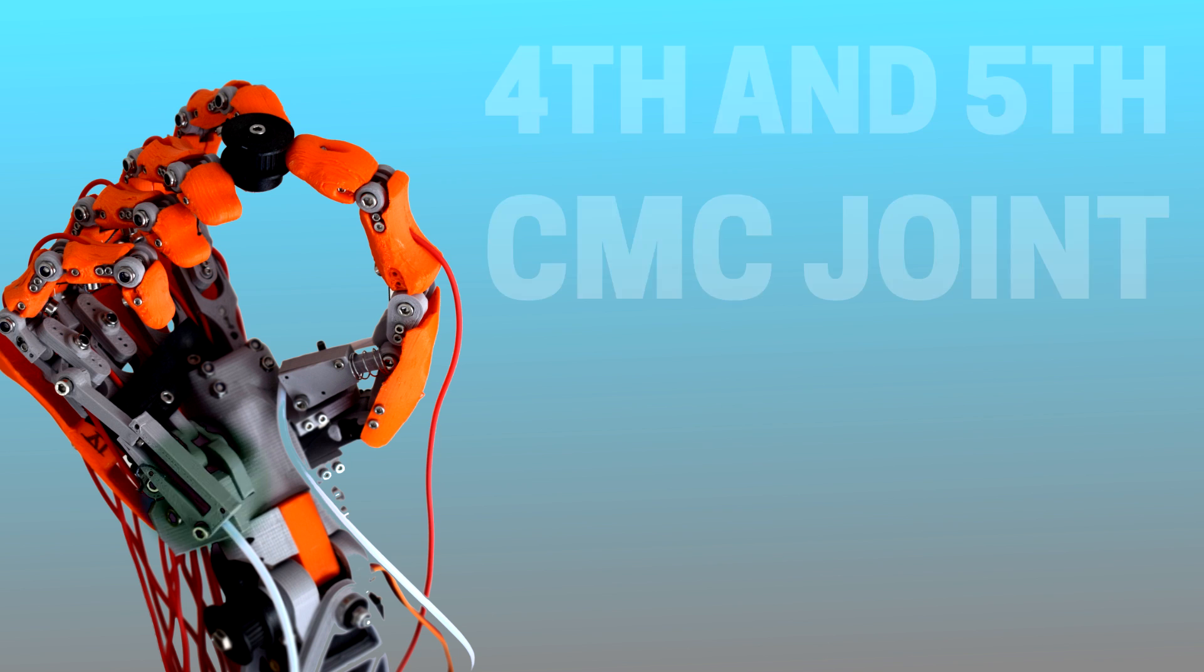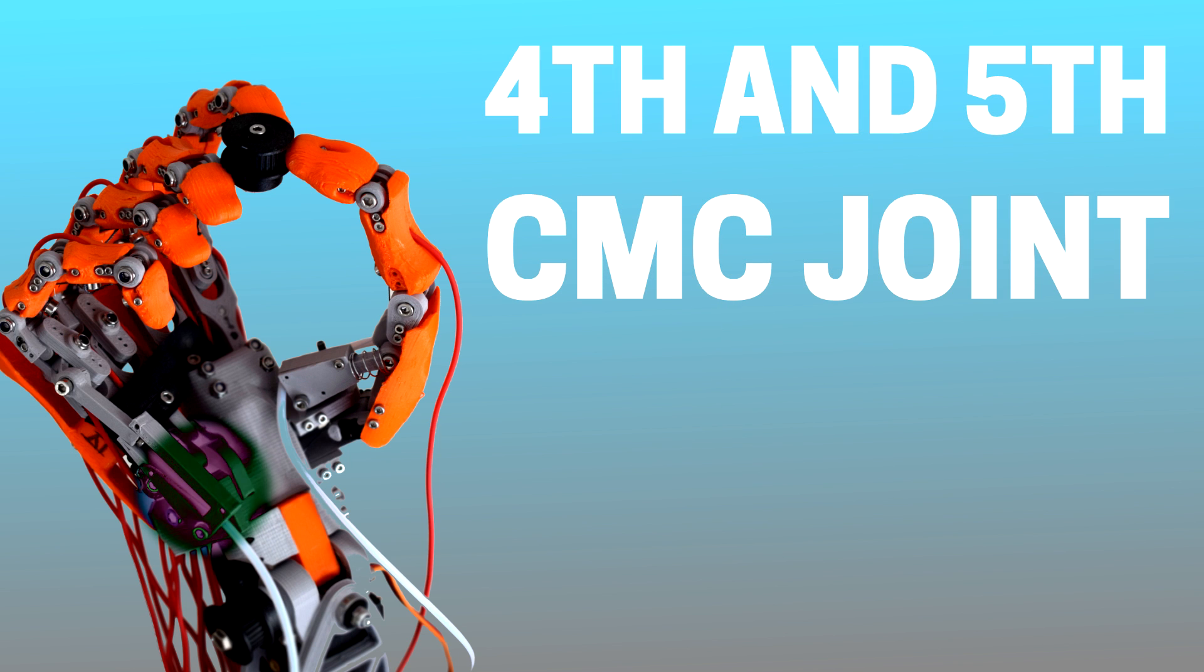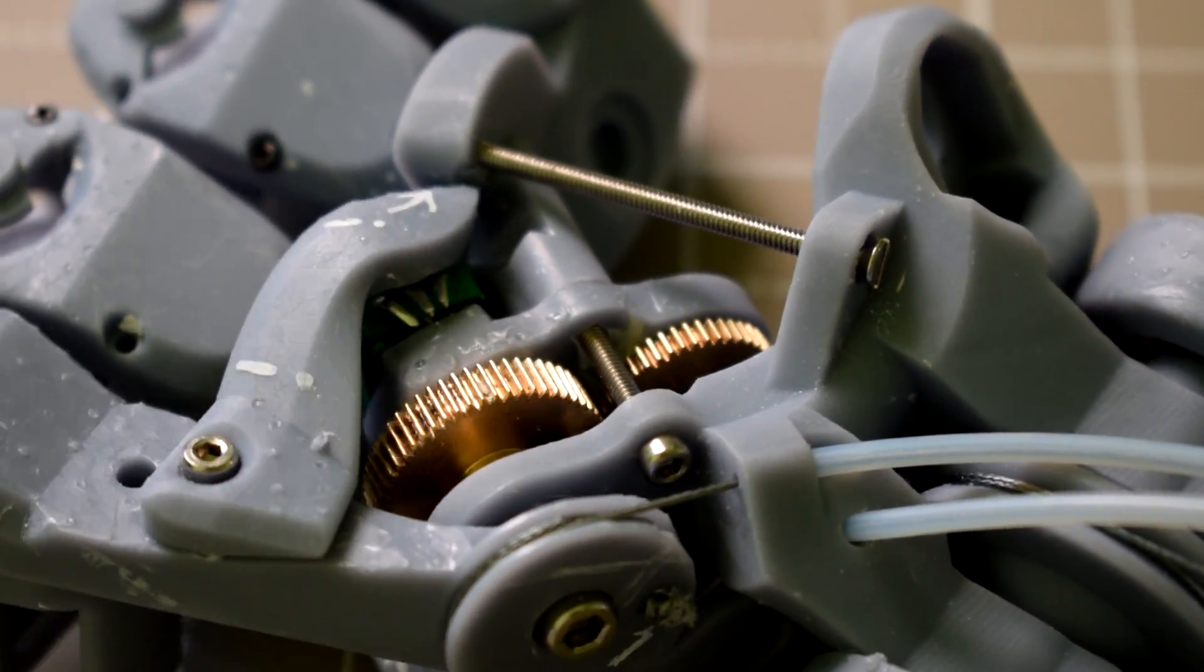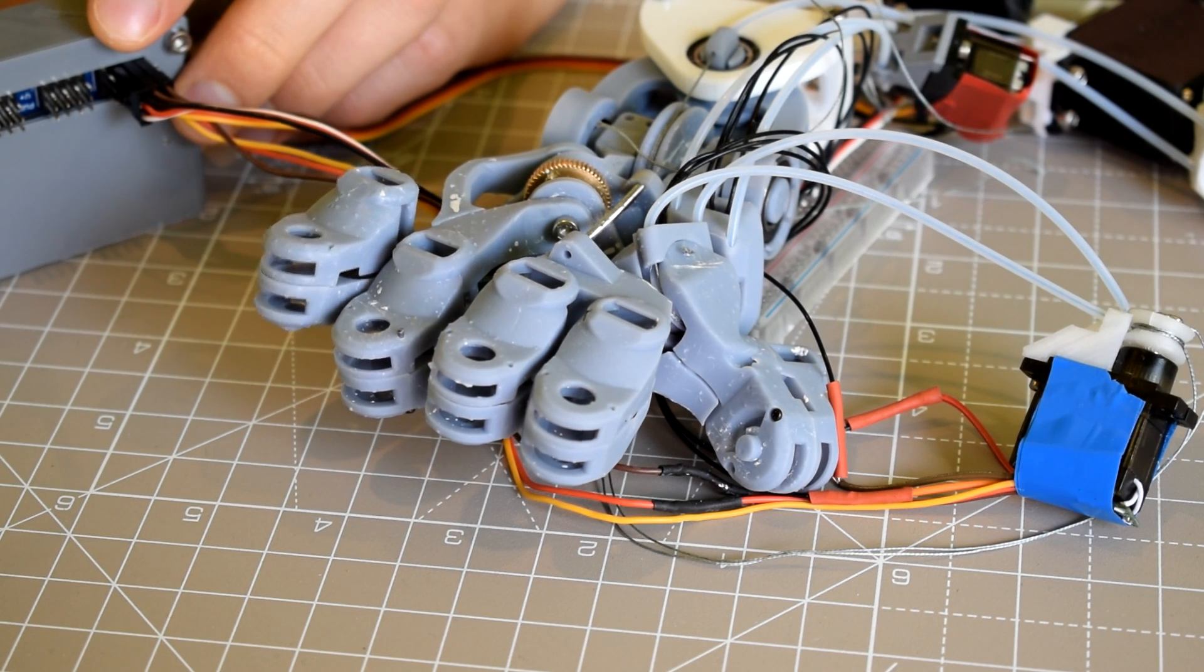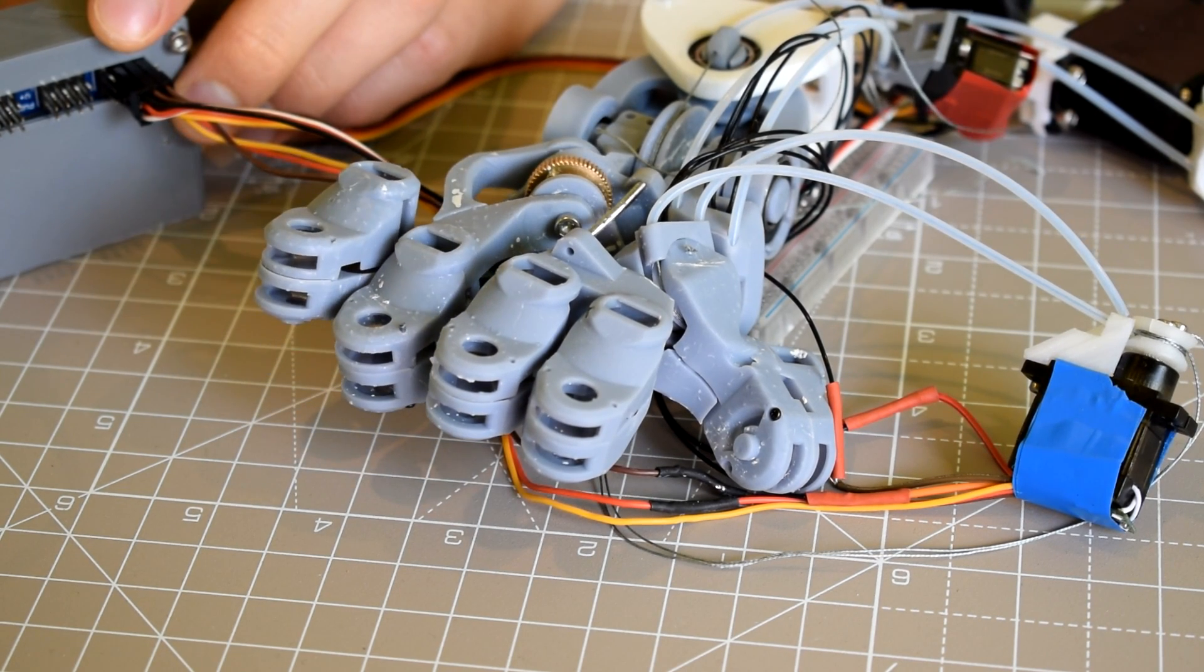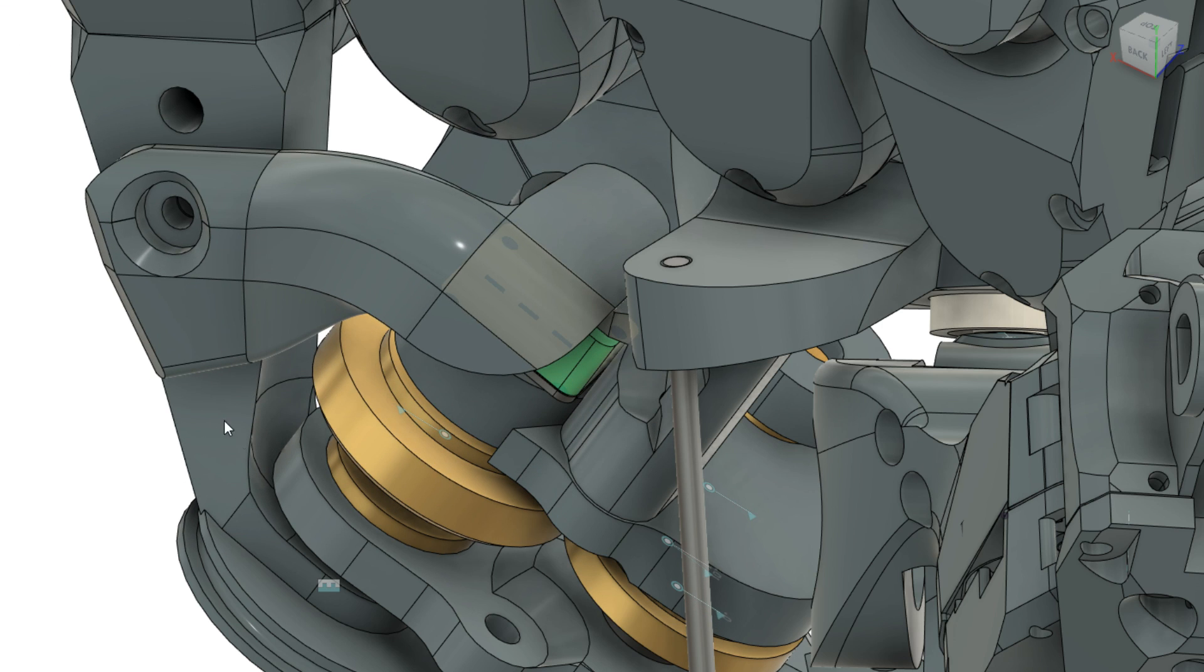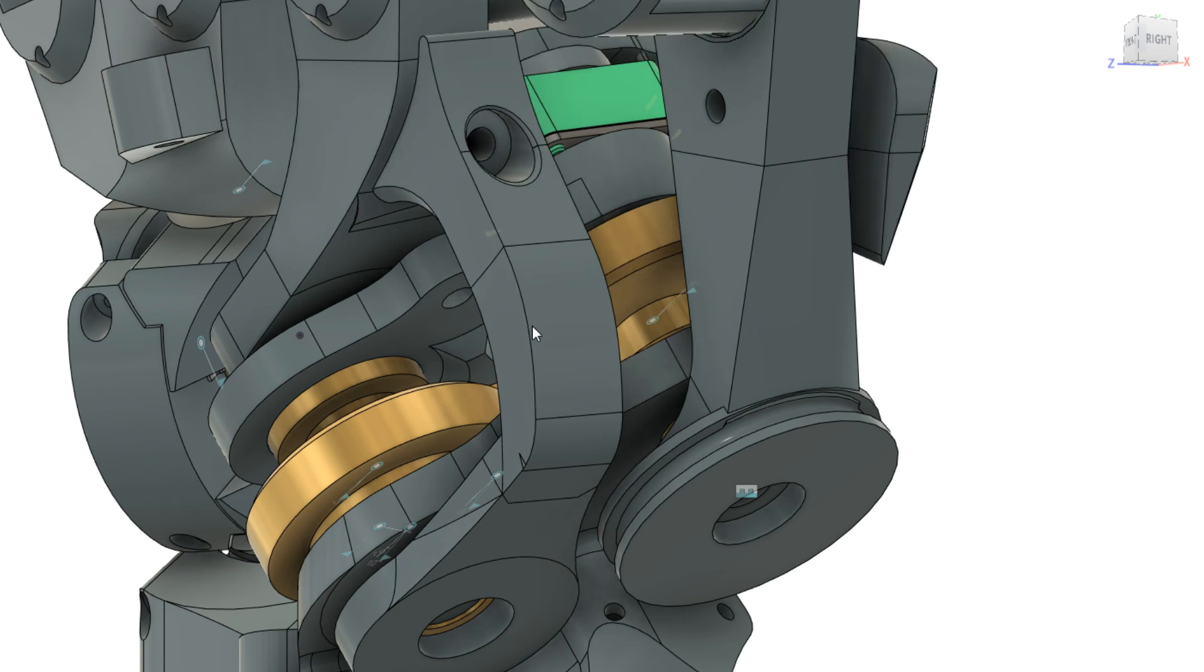So the CMC joint for the fourth and fifth metacarpals was basically unchanged from the last video, other than the additional linkages I mentioned I wanted to add. It was really tricky to work out how to arrange the linkages to allow everything to move smoothly, including the thumb. So some of the shapes have ended up sort of funky because they're structured in a way so as not to collide with anything as they move.